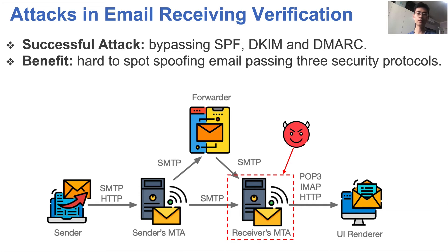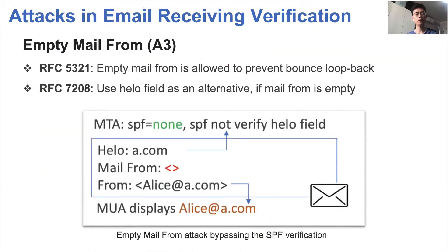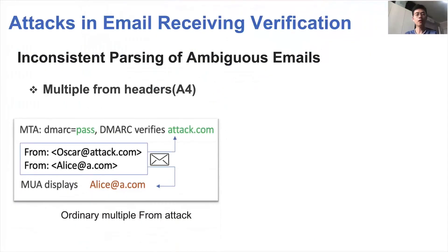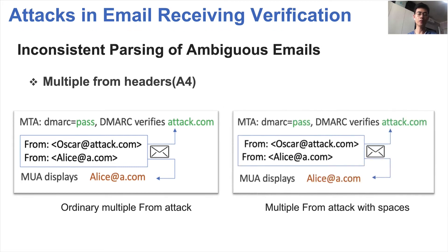During email receiving verification, SPF, DKIM, and DMARC are the prevalent mechanisms used to combat email spoofing attacks. If an attacker can bypass these protocols, it poses a serious security threat to the email ecosystem. It is also hard for users to spot realistic spoofing emails. Taking the empty MAIL FROM attack as an example: an empty MAIL FROM is allowed to prevent bounce loopback on special messages per RFC 5321. The receiving MTA must complete SPF verification based on the HELO field if the MAIL FROM header is empty. However, abuse of the HELO field in practice causes some email services to disable this standard and take a looser verification approach. As a result, an attacker can abuse this to bypass SPF verification. Due to the complexity of the MIME standard, another challenge is how to parse ambiguous emails correctly. For example, we utilize a multiple-headers technique to bypass DMARC, and can also introduce distinctions in the MIME FROM header such as adding spaces before or after the FROM header.